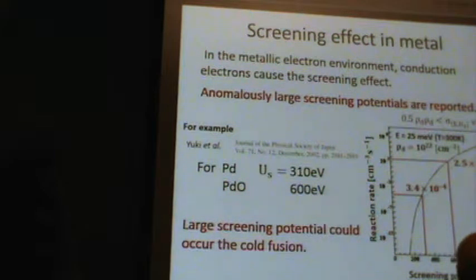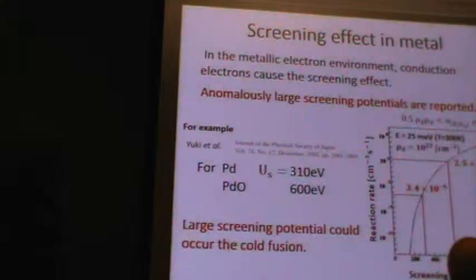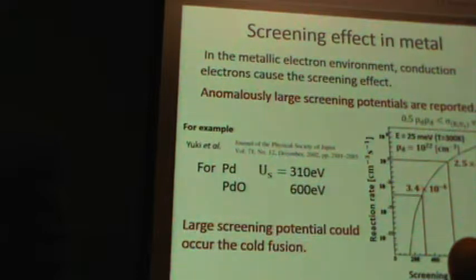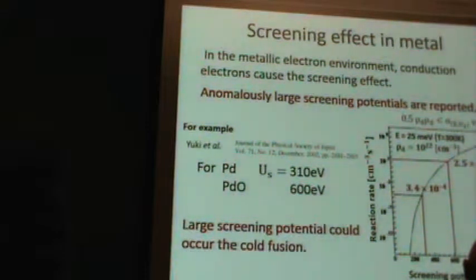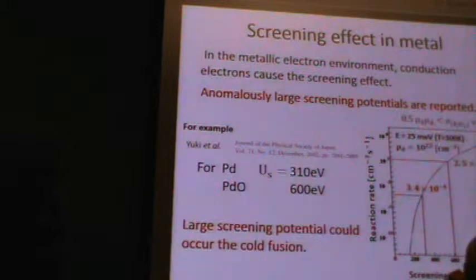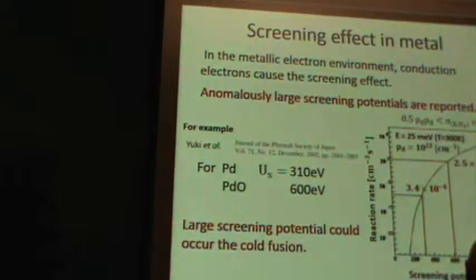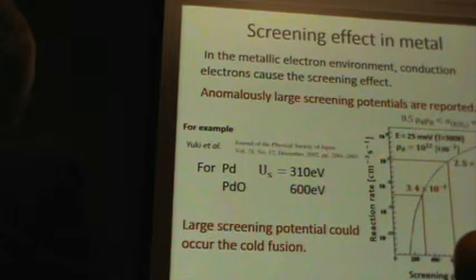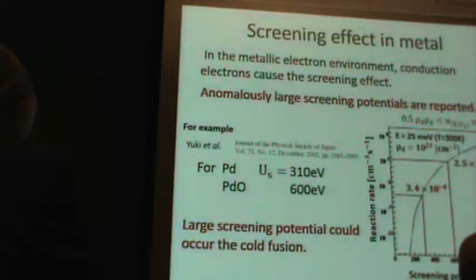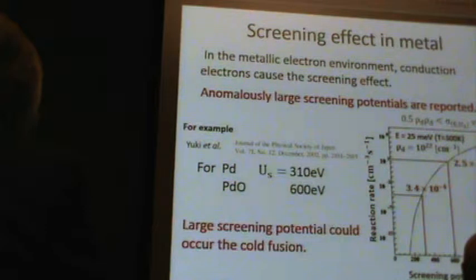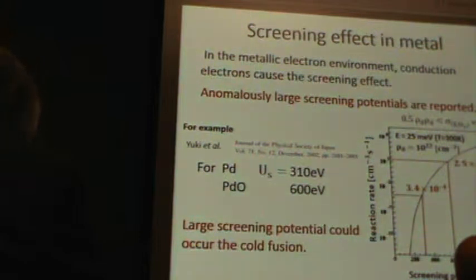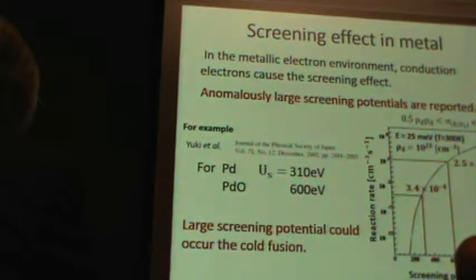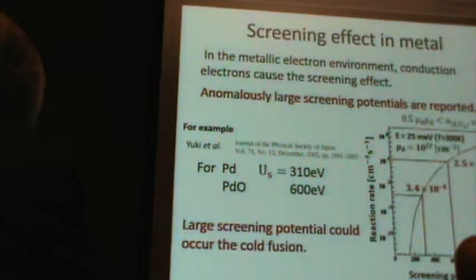At present, screening potential in various metals have been reported. In the metallic electron environment, conduction electrons cause the screening effect. However, for some metals, anomalously large screening potentials are reported. For example, the reported value by Yuki et al.: 310 eV for Pd and 600 eV for PdO. This figure shows the thermal nuclear reaction rate at temperature with the screening potential described. In this calculation, we suppose the electron density in metal is 10^23 per cubic centimeter.